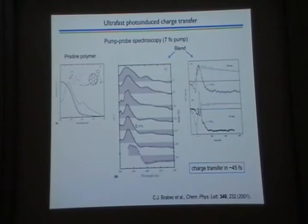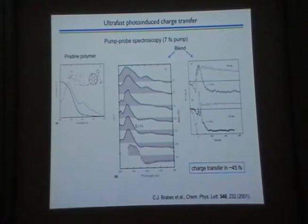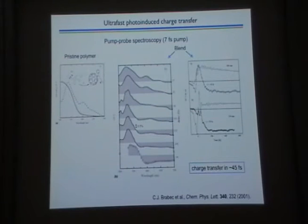Going back to the exciton issue — this was measured by Christoph Brabec about 10 years ago using pump-probe spectroscopy. Taking a blend of a phenylene polymer and a C60 acceptor, you look at delta-T over T. At very early times you see bleaching of the polymer, but very rapidly you get growth of an absorption feature — that absorption is from the polaron state created in the polymer. Looking at 580 nm, with vs. without fullerene, you see a dramatic drop in lifetime to about 45 femtoseconds — a direct measure of the electron transfer rate.